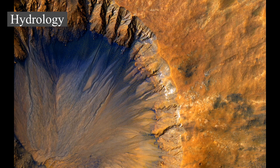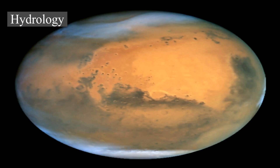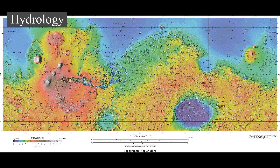Along crater and canyon walls there are thousands of features that appear similar to terrestrial gullies. These gullies tend to be in the highlands of the southern hemisphere and face the equator, all poleward of 30 degrees latitude. Several authors have suggested their formation involves liquid water, probably from melting ice, though others argue for formation mechanisms involving carbon dioxide frost or the movement of dry dust. No partially degraded gullies from weathering and no superimposed impact craters have been observed, indicating these are young features, possibly still active.